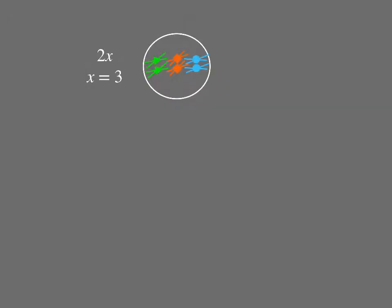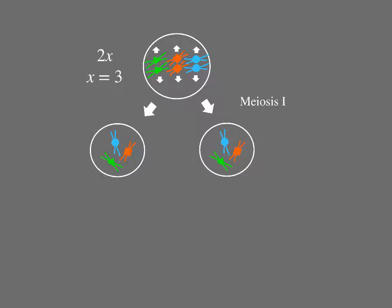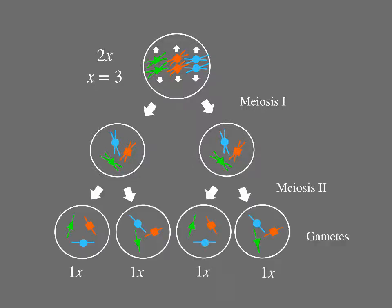Let's remind ourselves about how chromosomes move during meiosis in a diploid cell. The diploid cell shown here has three chromosomes in a set, x equals 3. In meiosis I, the homologs pair and then segregate into different cells. In meiosis II, the chromatids separate, resulting in four haploid 1x gametes.